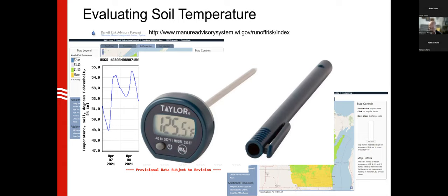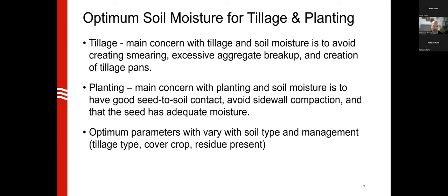Let's switch gears to soil moisture. We're concerned with it because it affects tillage — many of us still do spring tillage — and also affects planting through seed-to-soil contact and planter performance. The optimum parameters for soil moisture vary depending on soil type, tillage system, cover crops, residue present, and previous crop, so your mileage will vary.